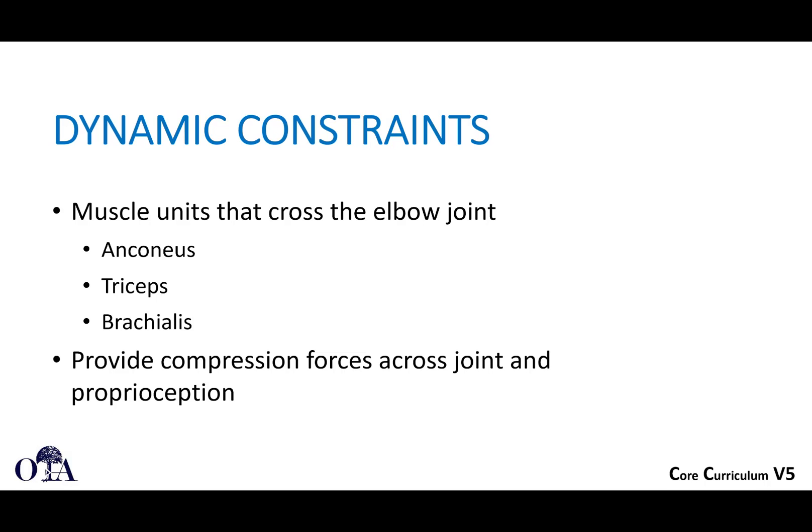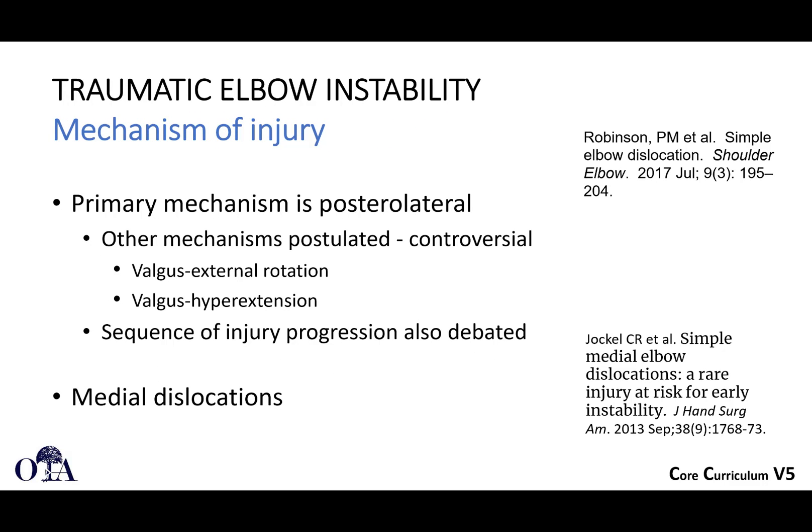Dynamic constraints are essentially the muscle units that cross the elbow joint — the anconeus, the triceps, the brachialis. These provide compression forces across the joint and proprioception.